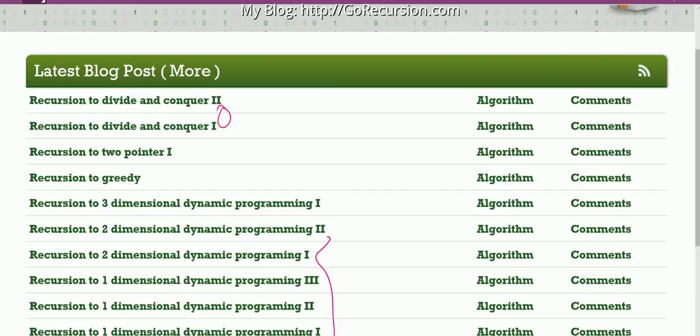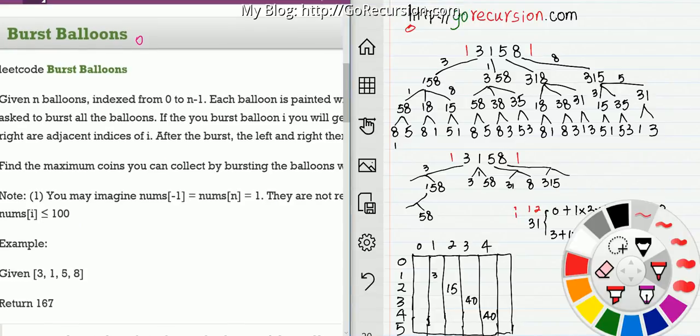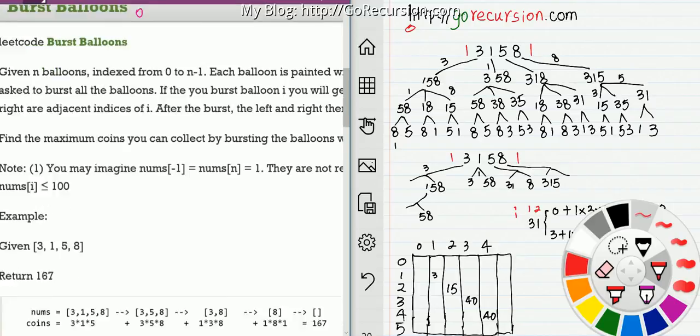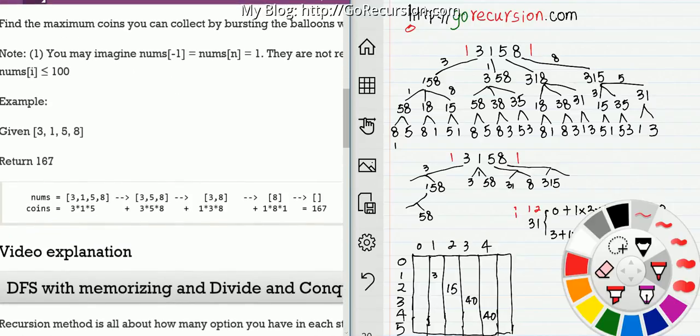Let's go back to our problem. For this example, if input is [3,1,5,8], each step we have an option. If we burst 3 first, then we get this subproblem. If we burst 1 first, we get this one.